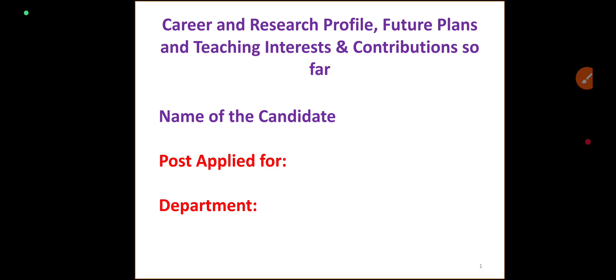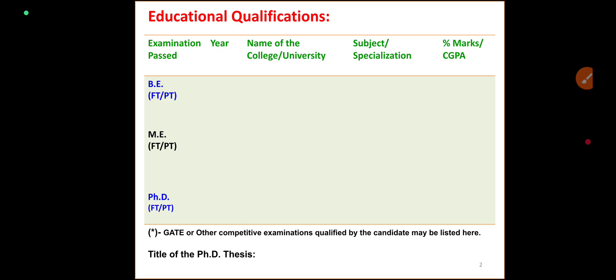The board section covers educational qualifications: examination passed, from 10th to 12th, then PhD. Fields include college, university, specialization subject, percentage of marks, and CGPA.